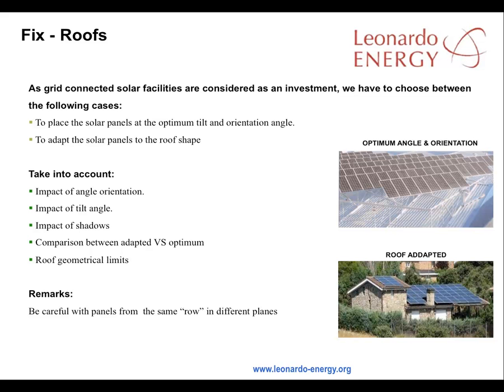With rooftop facilities, a choice has to be made between following the shape of the roof or tilting and orienting the panels to optimize their performance. The option that delivers the greatest investment return should be chosen. The variables to be taken into account are the impact of the angles of orientation and tilt, any shadowing, a comparison between the expected energy output from the two options, and the roof's geometrical limits. Care has to be taken when calculating the performance of panels that are on the same row, where variations in the roof levels would mean that the panels are actually on different planes.